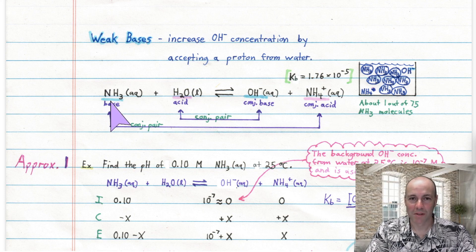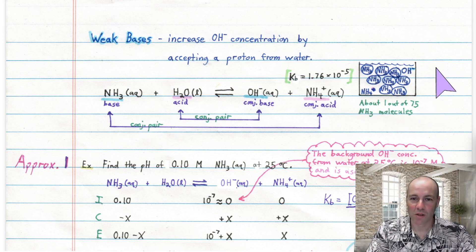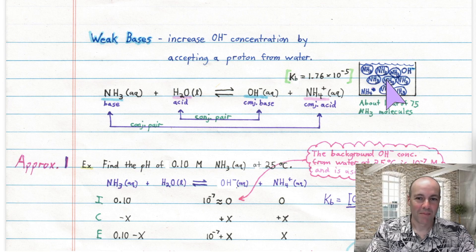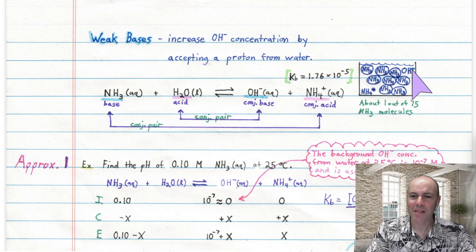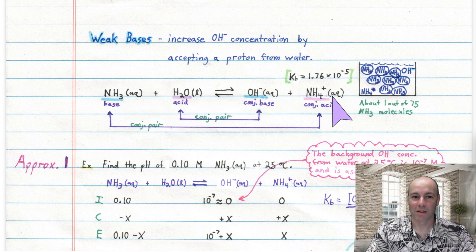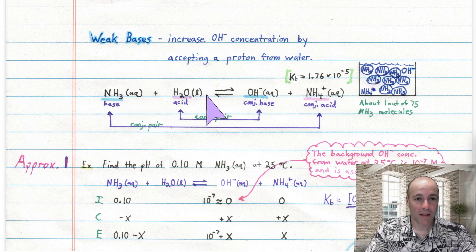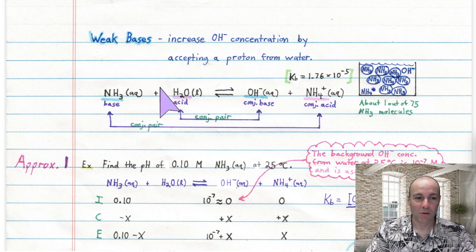Not all ammonia molecules do that — only a small fraction, maybe about one out of every 75. If you visualize a solution of ammonia, you might have just a couple of hydroxide ions and ammonium cations. It's an equilibrium occurring between molecules and ions, as shown by the two-way arrow. Like all equilibrium equations, we can find the equilibrium constant — the Kb for this reaction is 1.76 × 10⁻⁵.